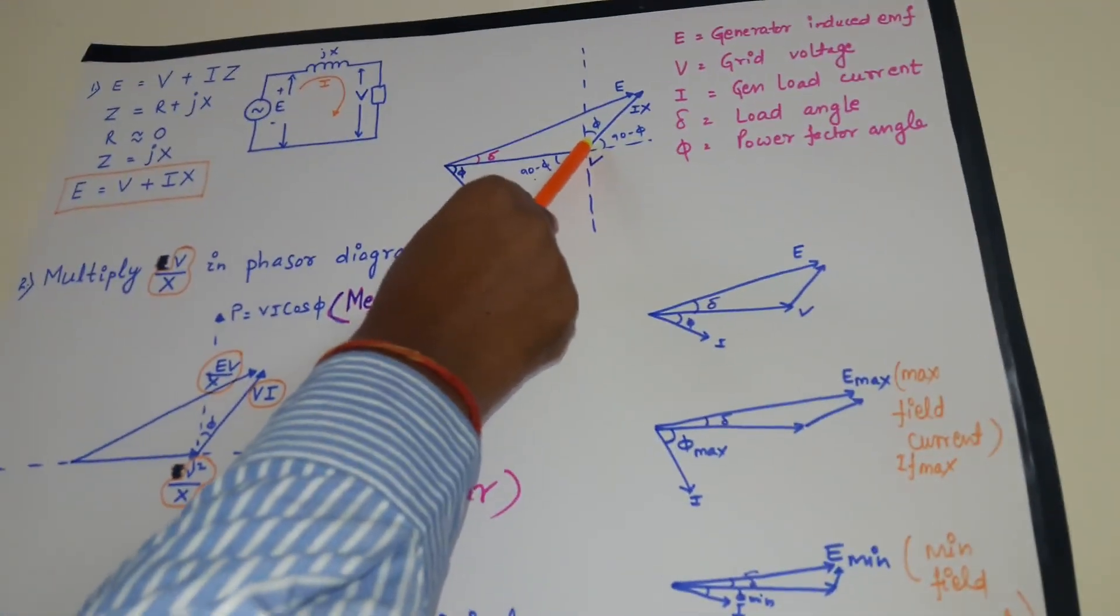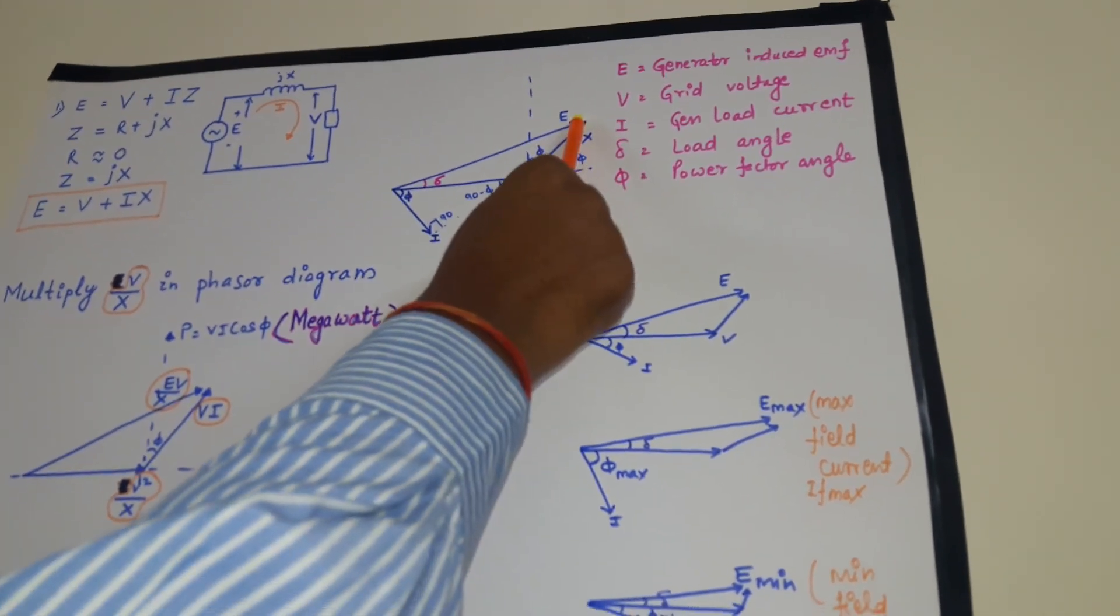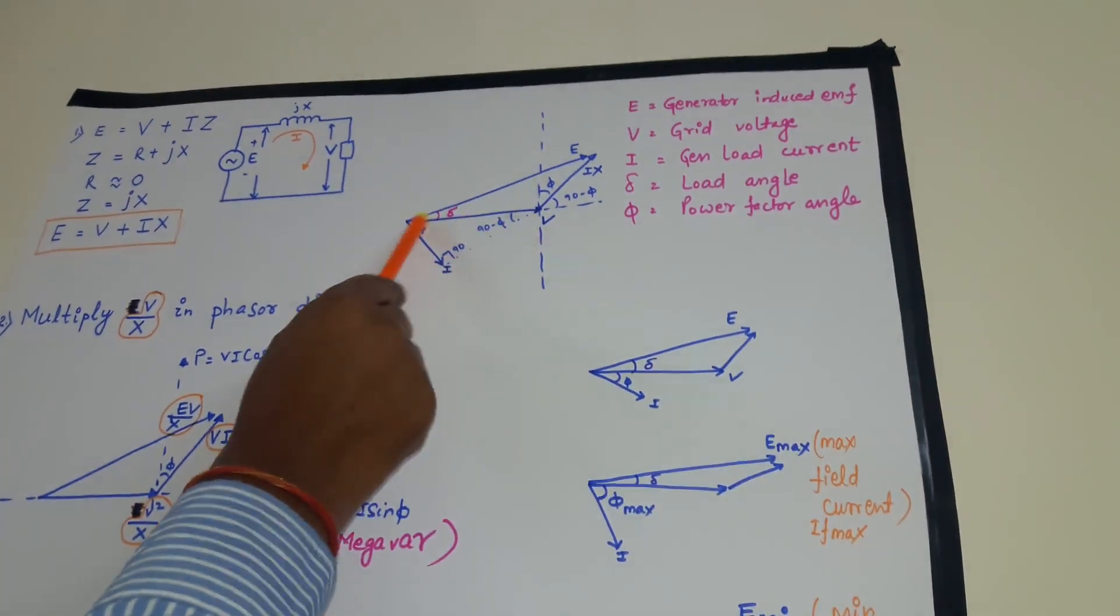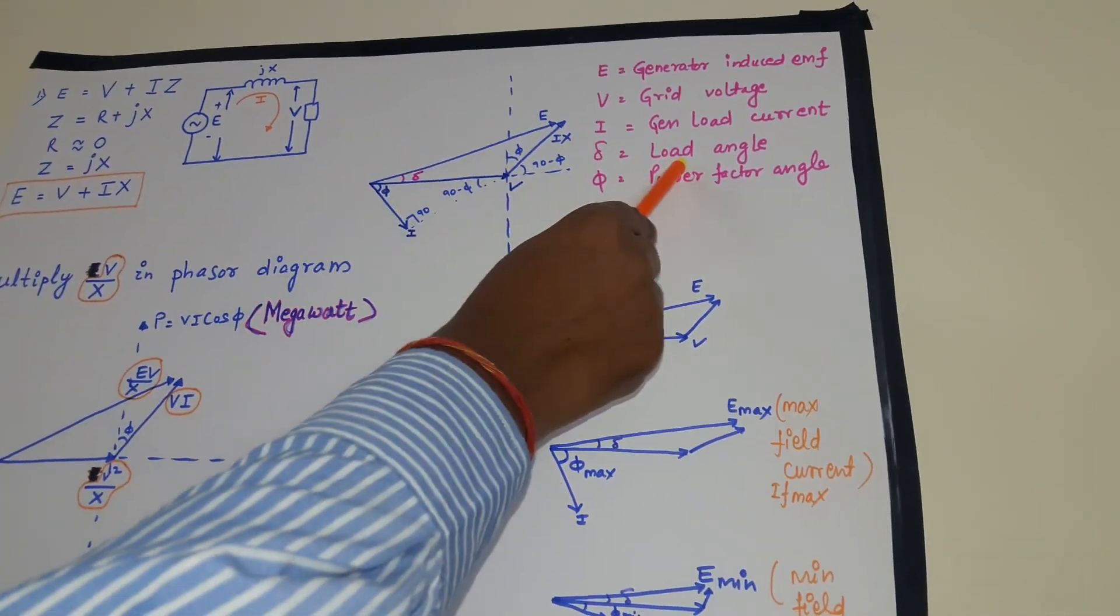So what will be IX? It is just perpendicular to this line I. This is my IX. And summation of my V and IX will be equal to E. And the angular separation between V and E is equal to delta. Delta is load angle.